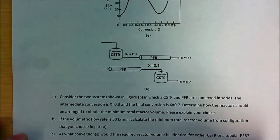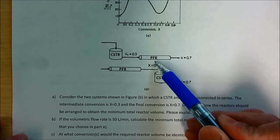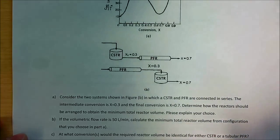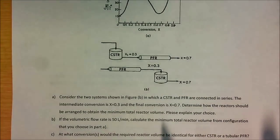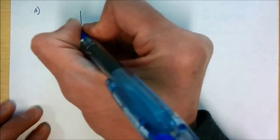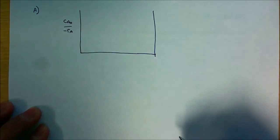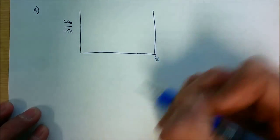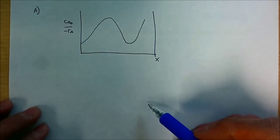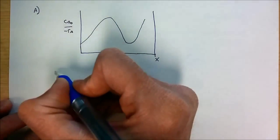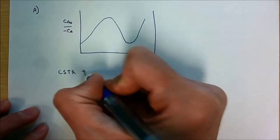There are two different scenarios. The first scenario is to use a CSTR reactor first until conversion 0.3, then followed by a PFR reactor until conversion X = 0.7. In the second scenario, we can have a PFR reactor followed by a CSTR. To answer this question we can sketch the plot of C_A0 over minus R_A versus conversion and apply each scenario.